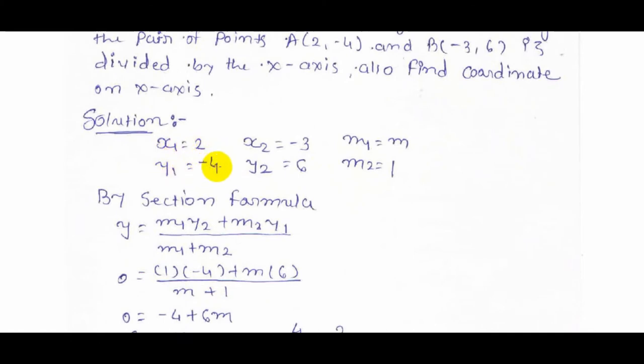For the solution: x1 = 2, y1 = -4, x2 = -3, y2 = 6. We assume m1 = m and m2 = 1.